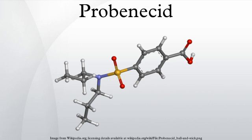In the kidneys, Probenecid is filtered at the glomerulus, secreted in the proximal tubule, and reabsorbed in the distal tubule. Probenecid works by interfering with the kidney's organic anion transporter, which reclaims uric acid from the urine and returns it to the plasma. If Probenecid is present, the OAT binds preferentially to it, preventing reabsorption of uric acid. Hence, the urine retains more uric acid, lowering uric acid concentration in the plasma.